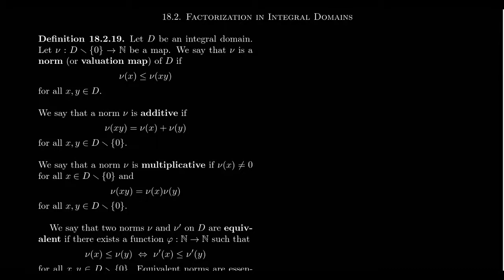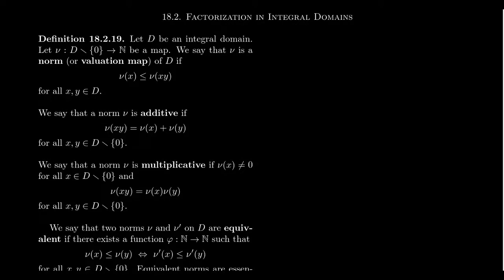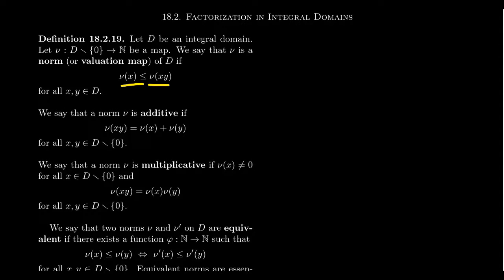Before we can generalize the notion of the division algorithm like we see with integers, we have to have a notion of a norm, or sometimes called a valuation map, which I'm going to define here. If we have some integral domain D, we define a map — typically called nu — from the non-zero elements of the domain to the natural numbers. We call it a norm, which is why it's denoted nu, or it can be called a valuation map. The one thing we require is that the norm of an element is less than or equal to the norm of a product of that element with any other element in the domain, where the ordering is the usual natural number ordering.